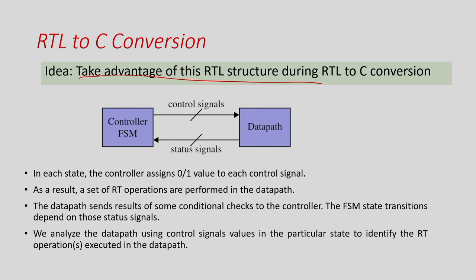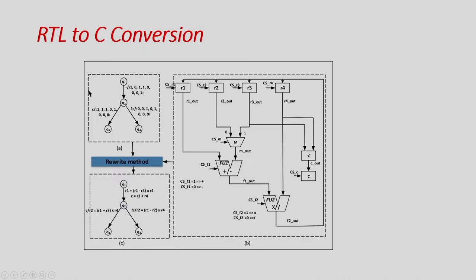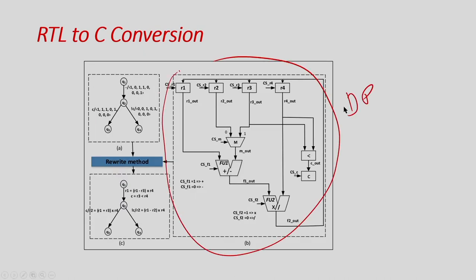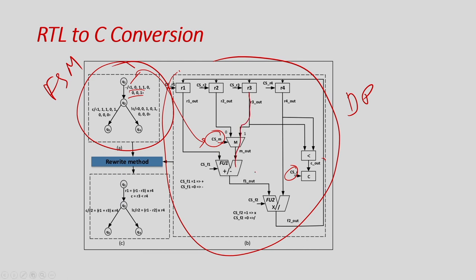The RTL generated by HLS has a very separable controller and datapath. In the datapath you have function units, registers, multiplexers, demultiplexers, and interconnections; the controller is basically an FSM. The controller gives control signals — 0 or 1 — to the datapath components every clock. For example, if a signal is 1, a particular operation happens; if 0, a register like R4 gets updated while R3 does not. This is how the controller controls operations in the datapath every clock cycle.